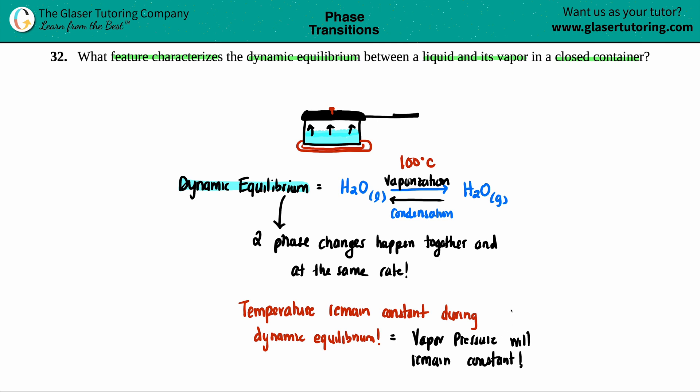And that's all of your characteristic features. So it's the two phase changes happening together at the same rate. Temperature and vapor pressure will remain constant just as long as you're in that equilibrium, just as long as you're in that phase change. And that's it.